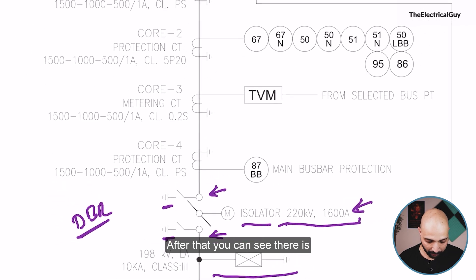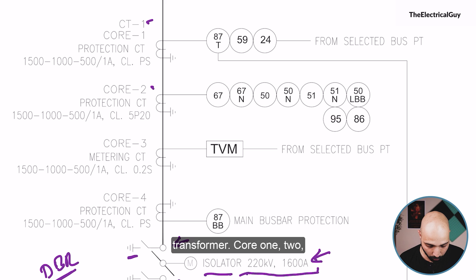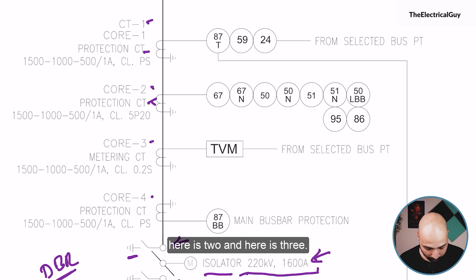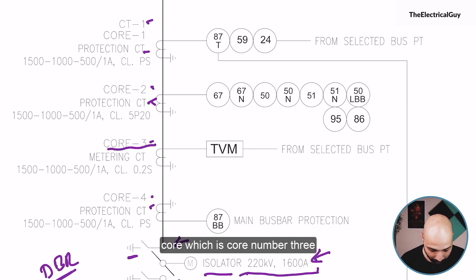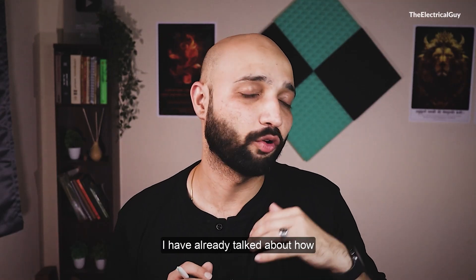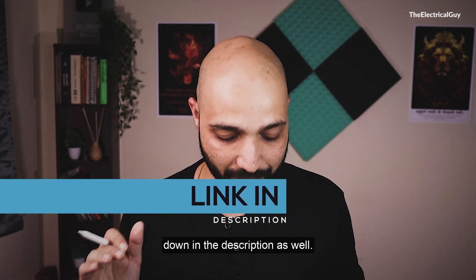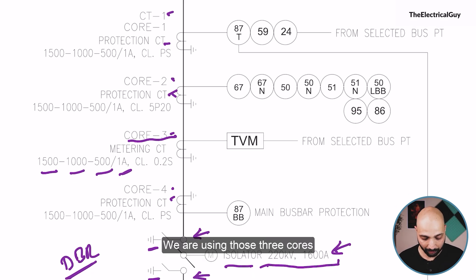After that you can see there is one more current transformer used. This is a four-core current transformer — cores one, two, three and four. Three of the four cores are protection cores, and core number four is the metering core. The primary current ratios are 1500, 1000 and 500, and the secondary output is 1 ampere. So we are using those three cores for protection and one core for metering purpose.